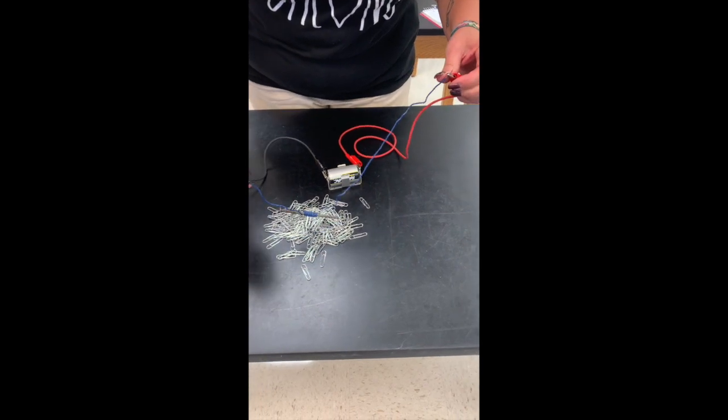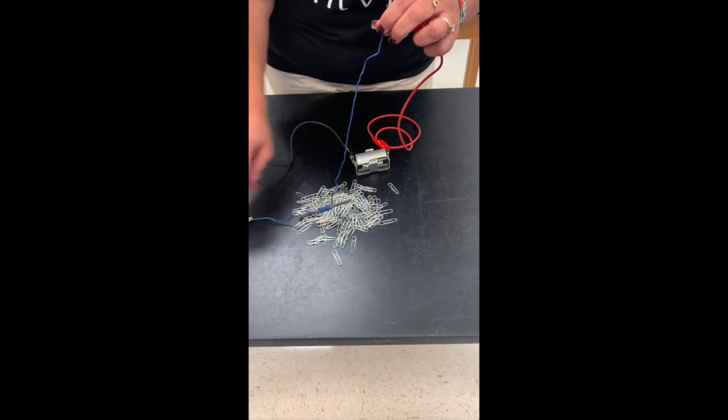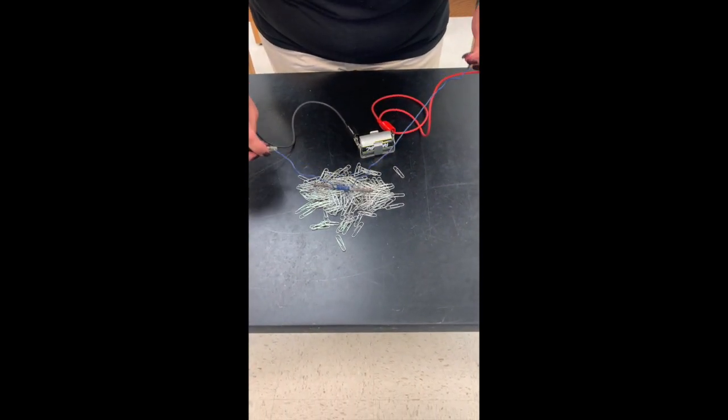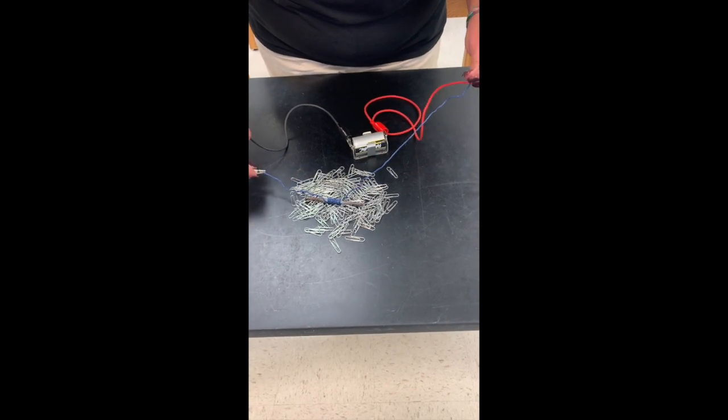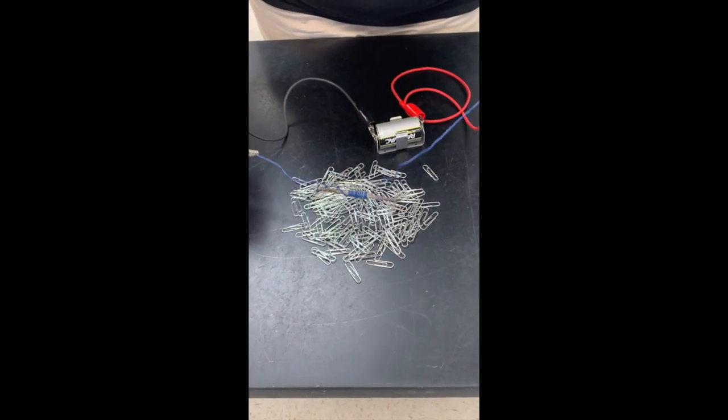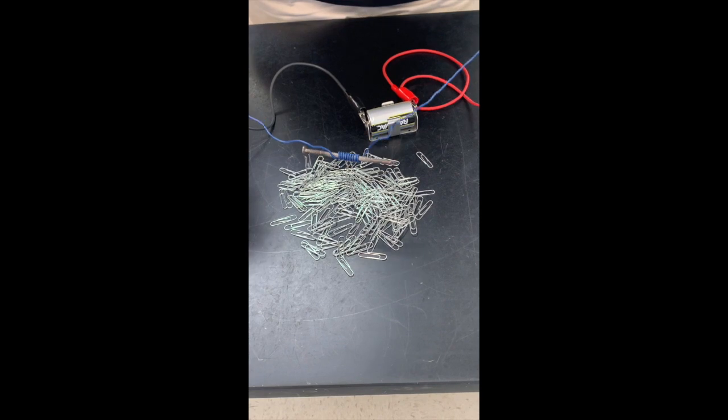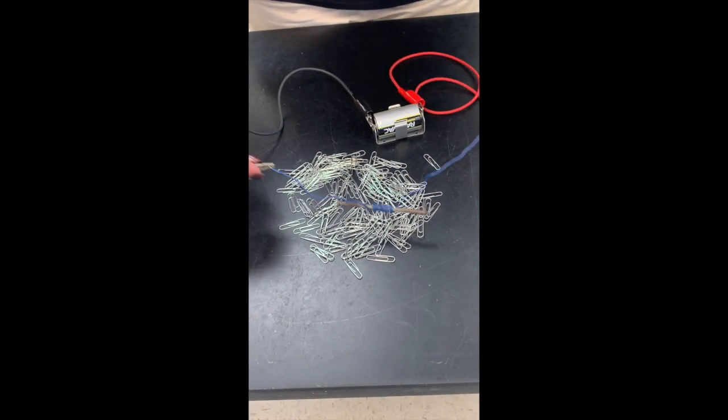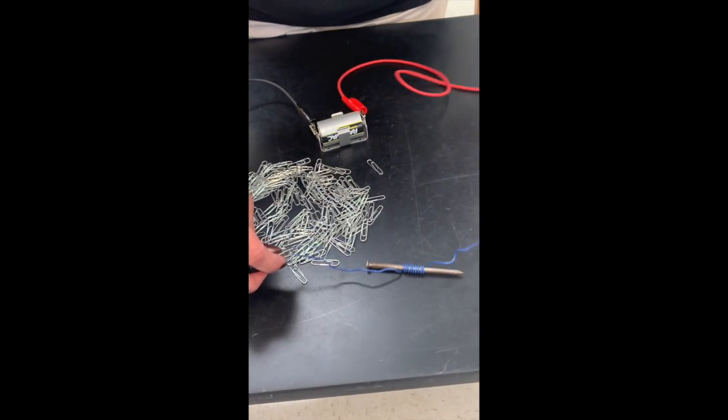And when I do that we know that it now produces a magnetic field here and I can put it into my paper clips and you can see every once in a while we get one or two paper clips to stick to the electromagnet. With 1.5 volts you're not going to get much.